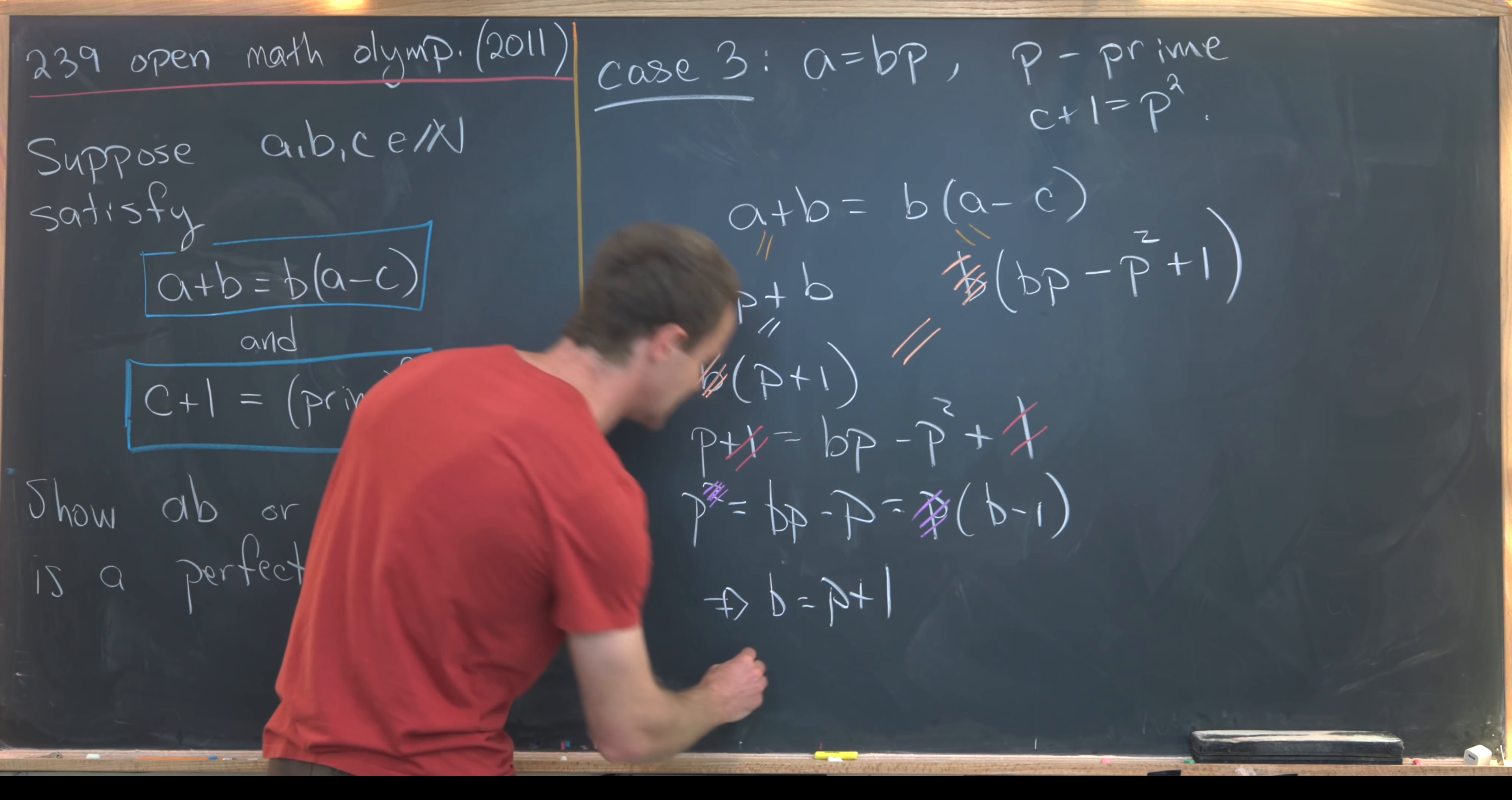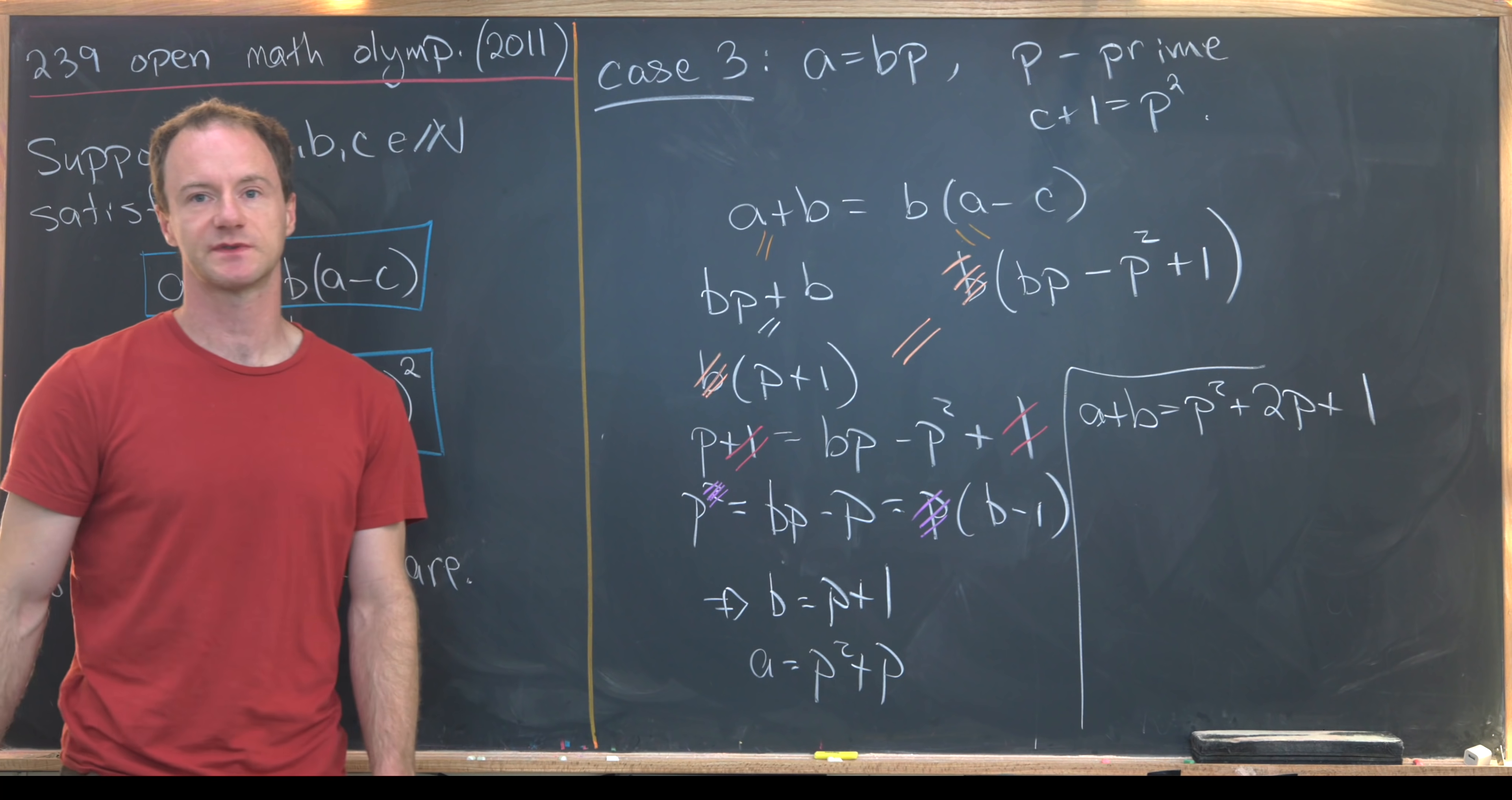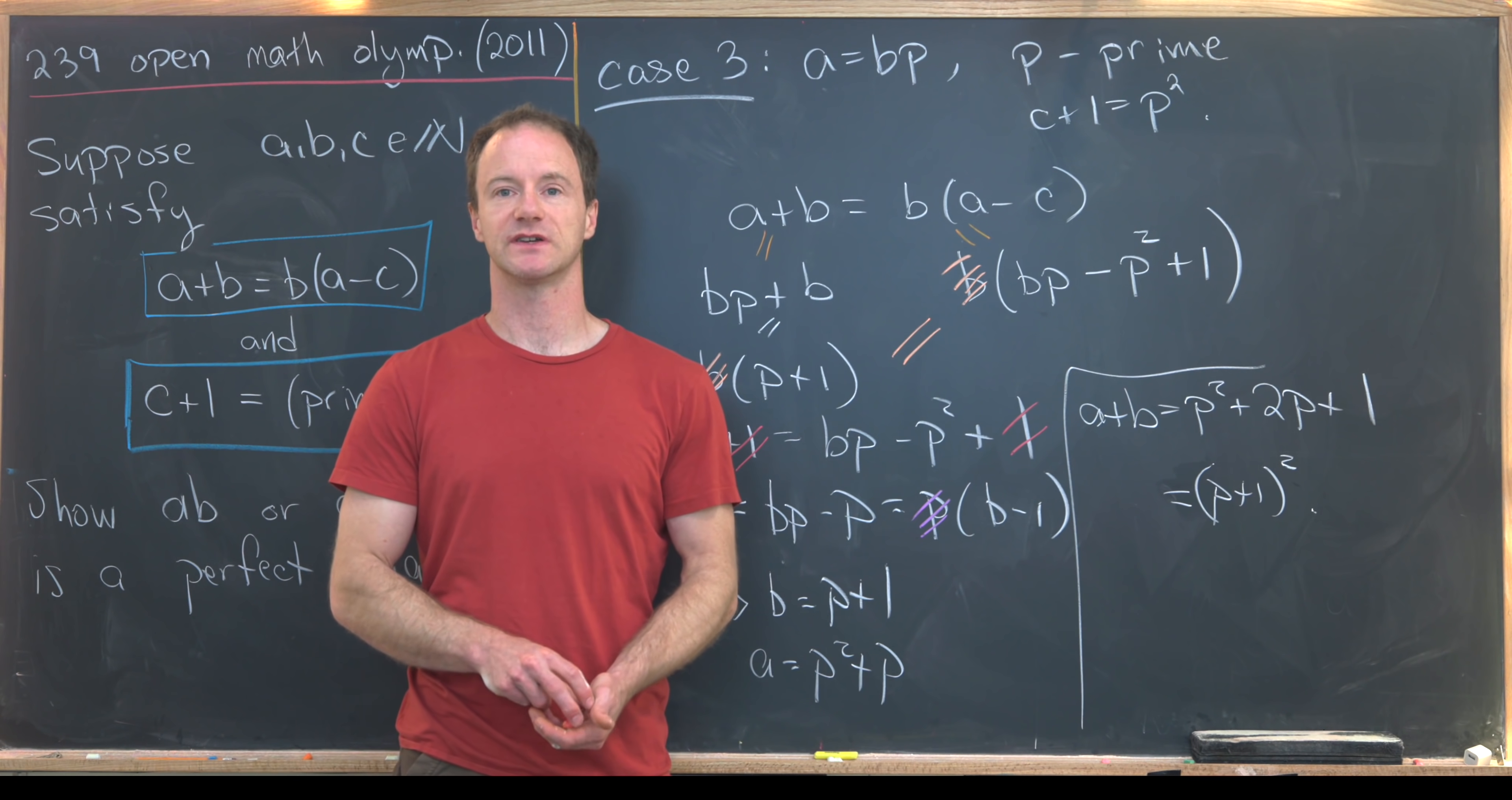But then furthermore a = bp. So that means that a = p²+p just by multiplying by p. Now we're ready to finish it off. We can take a+b in this case, which will be p²+2p+1 after combining like terms. But now we can factor that as that's just a standard binomial squared. This is going to be (p+1)². And so while in the first two cases we got that ab was a perfect square, in this case we get that a+b is a perfect square. And that's a good place to stop.